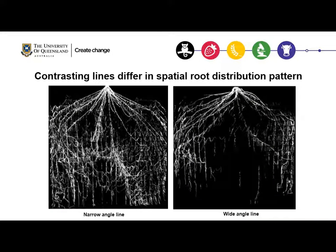These photographs show the contrasting root development pattern between the two lines. The photograph on your left represents the narrow angle line — you can see the narrow angle line has a steeper root system, much better root occupancy, and more root distribution at depth. In contrast, the wide angle line has a shallow root system with no more branching at depth.